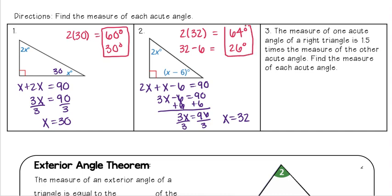Now let's look at this word problem. This one says that the measure of one acute angle of a right triangle is one and a half times the measure of the other acute angle. I want to find the measure of each acute angle. Well, I don't know the measure of either, so I'm just going to label the first one as x.